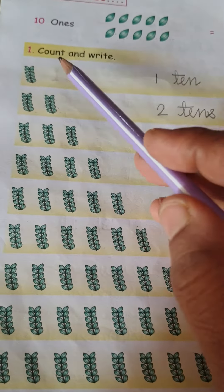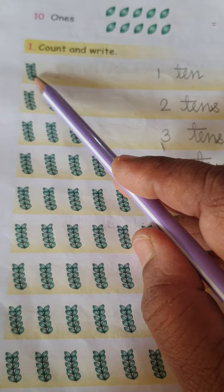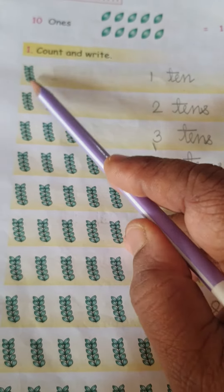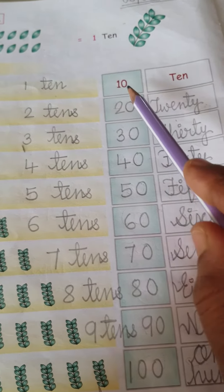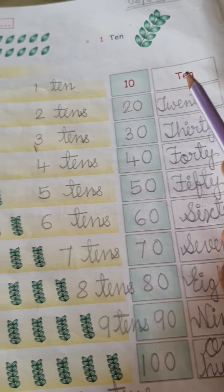Count and write. First here 1 together means together 10. Right here 1 ten means 10. Right here 10 spelling.